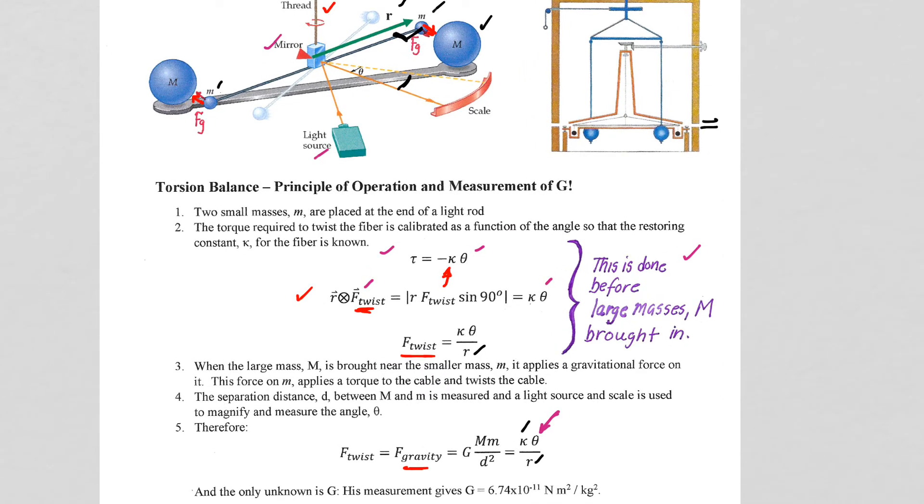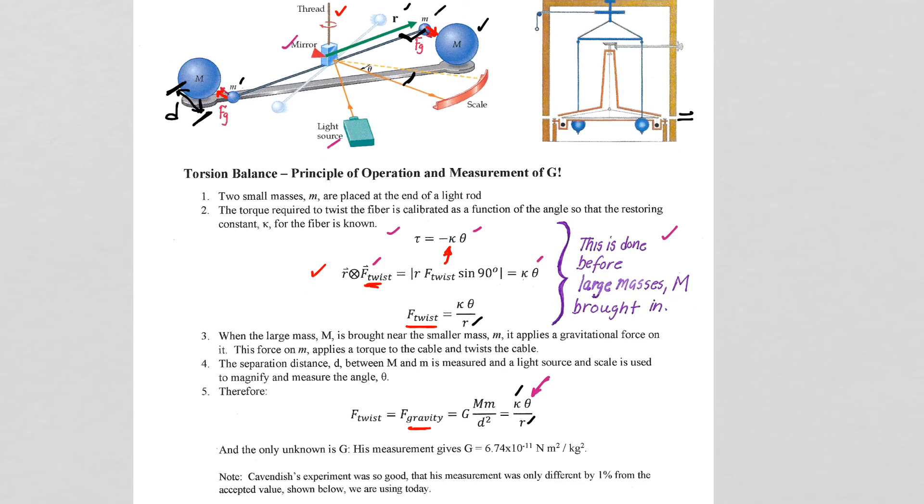And so you're clear as to what the d squared is, where that d comes from. That's the distance, center of mass to center of mass distance, between capital M and little m. So get that into your notes so you know what the d is. So that's the d in the d squared that we have down here.